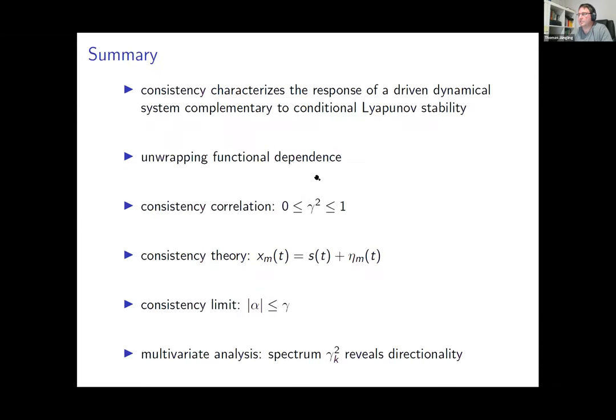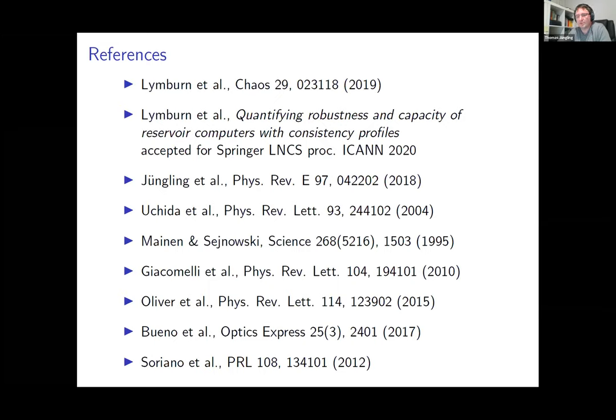And with this, I'd like to wrap up. Consistency characterizes the response of a driven dynamical system complementary to conditional Lyapunov stability and beyond the binary classification of GS versus no GS. The replica test or the replica setup of consistency unwraps an arbitrary complicated functional dependency that allows us then to measure with a simple correlation measure between zero and one, the degree of functional dependency. In theory, we think of all the responses as composed by a consistent response and an individual noise component. And consistency has the property to fundamentally limit all correlations of the output and also reservoir performance. And a consistency spectrum reveals an interesting directionality effect relevant also for predicting performance. Some references and thanks a lot for watching. Thank you.